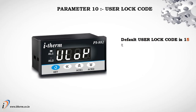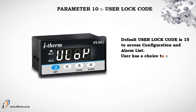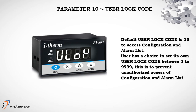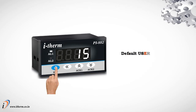Parameter 10: User Lock Code. Default user lock code is 15, used to access configuration and alarm list. The user has a choice to set their own lock code between 1 and 9999. This is to prevent unauthorized access to the configuration and alarm list. Default value is 15.